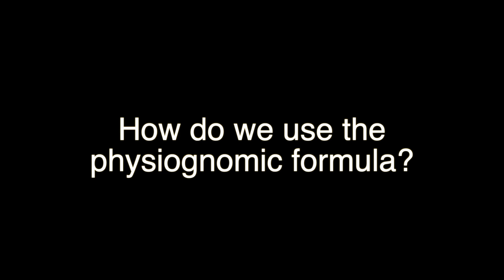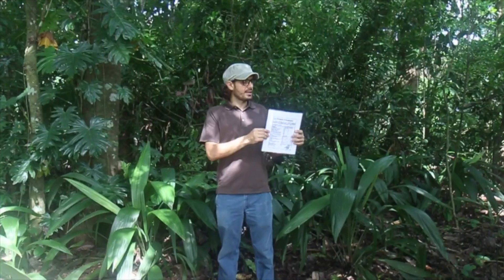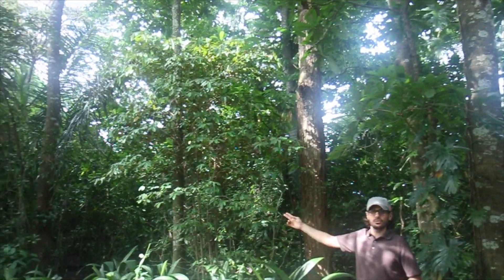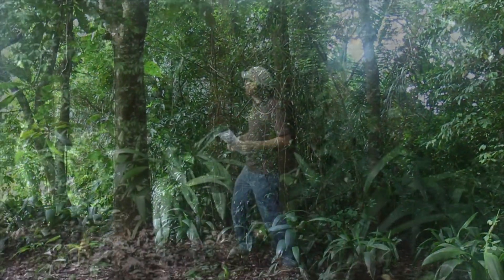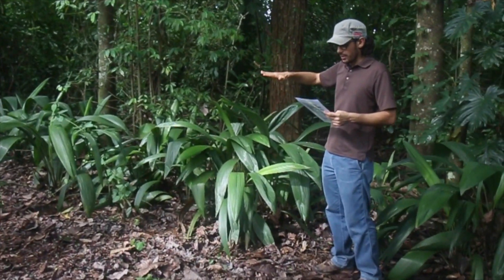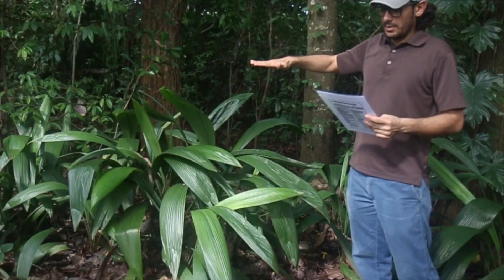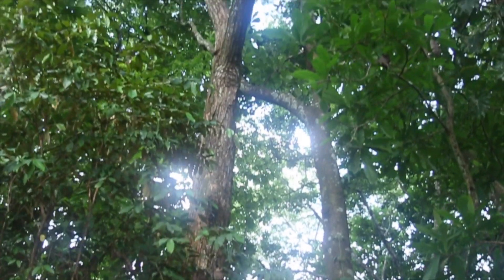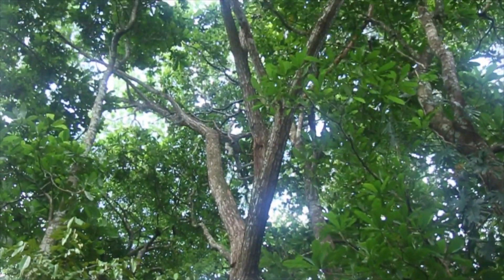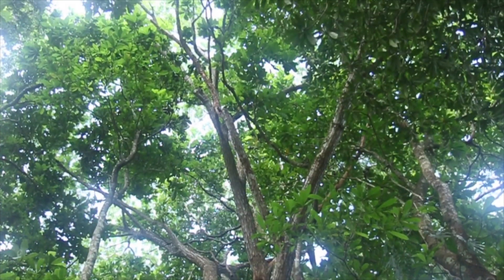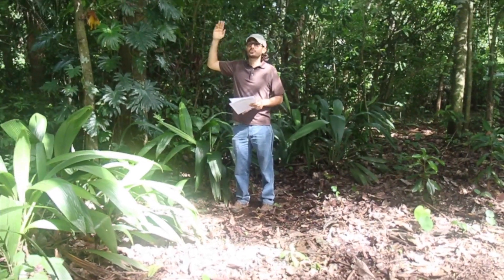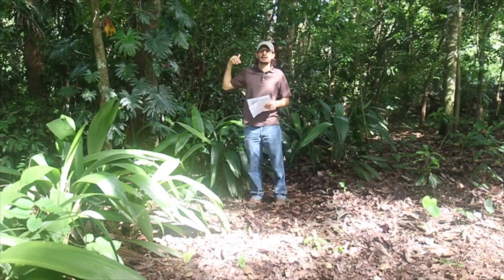Now we are going to apply the physiognomic formula in a mature forest, using the formula page in the IAFN field guide or laminated sheet if available. The first step is to identify an evaluation area as seen by the human eye at 360 degrees. The next step is to define the number of levels or strata of vegetation — for example, the herbaceous stratum, the understory, the arboreal stratum, and the emergent stratum. We repeat the operation with all other vegetation levels, including herbaceous plants, vines, palms, epiphytes, etc. This gives us the F1 formula of the mature forest.